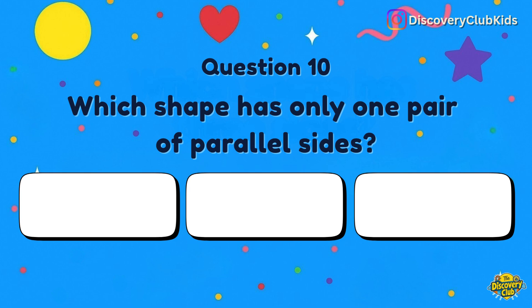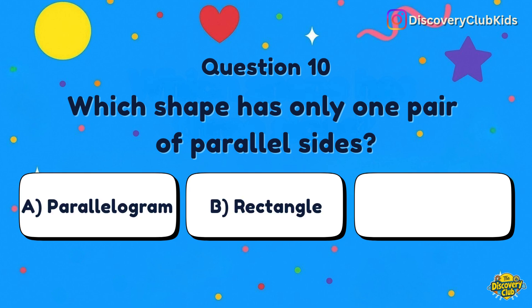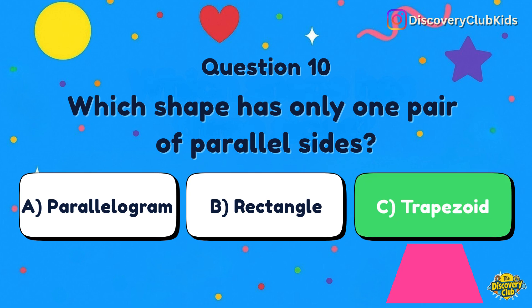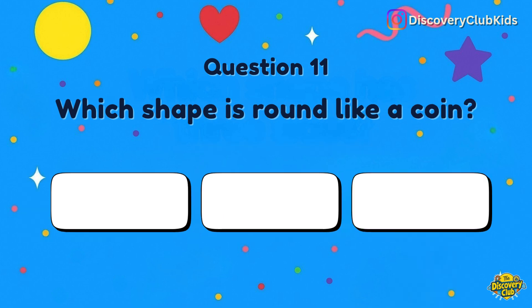Question number 10: Which shape has only one pair of parallel sides? Your choices are parallelogram, rectangle, or trapezoid. The correct answer is trapezoid — it has just one pair of parallel sides.